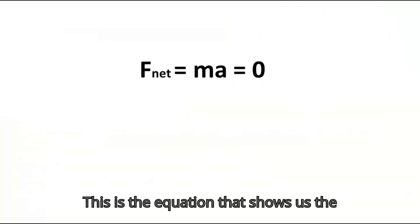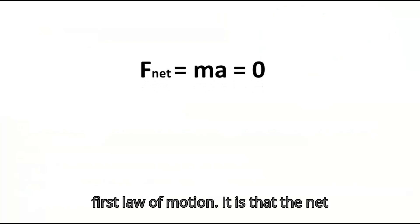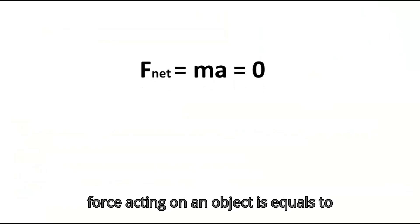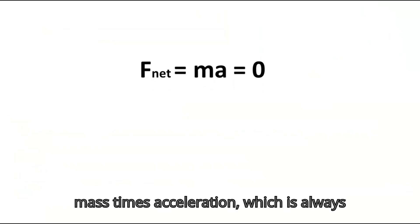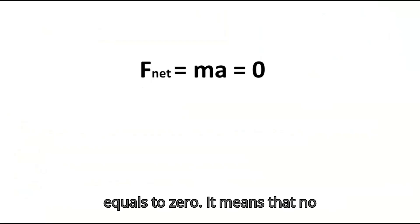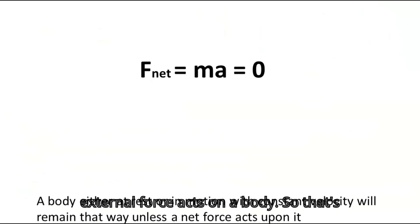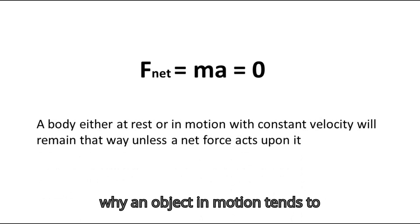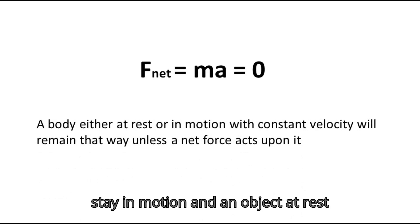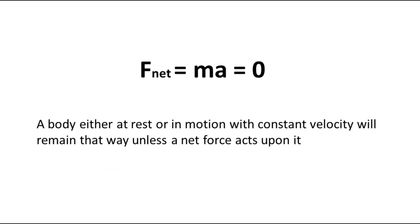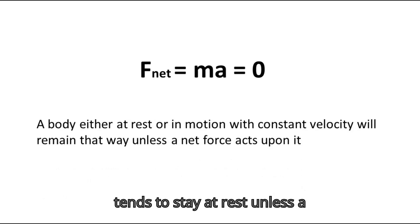The equation representing the first law of motion states that the net force acting on an object equals mass times acceleration, which equals zero. This means that no external force acts on the body, so an object in motion tends to stay in motion and an object at rest tends to stay at rest, unless a net force acts on it.